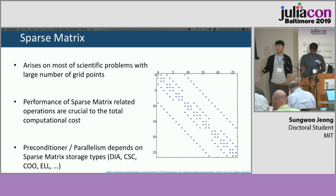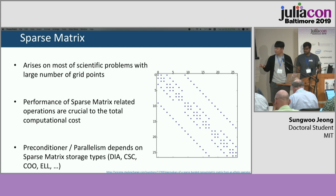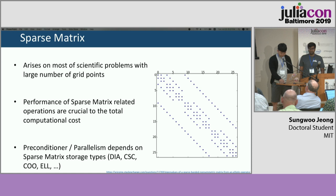Sparse matrices are something we use every day — they come up in almost every scientific problem with a large number of grid points. It's not just the kernels of those sparse matrices that are important, but also how we store them is very important, because it will really impact a lot of kernels you're going to use and the overall performance of your simulator or models.